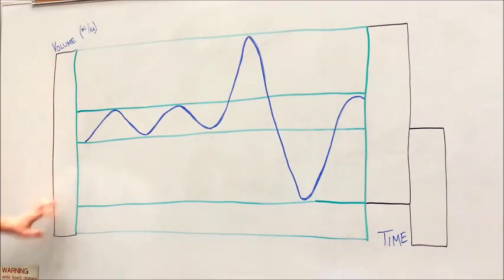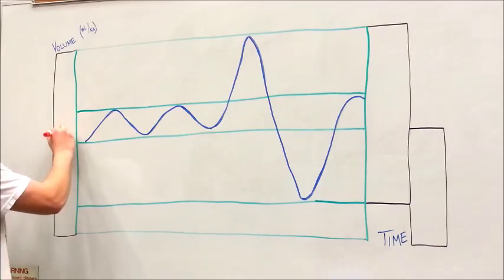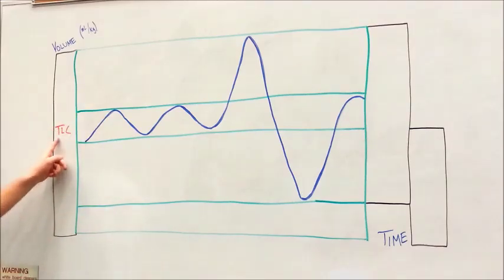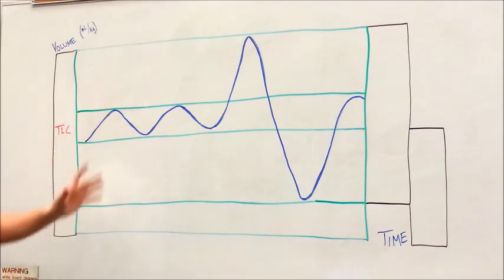This first black box here on the left refers to our TLC, or total lung capacity. You can see that this black box encompasses the entire chart, meaning that any sort of volume that's relevant to the lungs is included in your TLC.